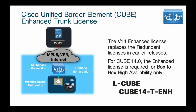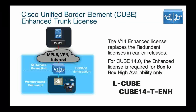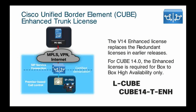Similarly, you have the Cube 14-T-Enhanced license. This is an enhanced trunk feature set — specifically, the license used to provide box-to-box redundancy. This would be two session border controllers or two CUBEs in the same data center with direct failover, providing in-data-center failover for live calls. Keep that in mind — you do need the Enhanced license when doing box-to-box redundancy.